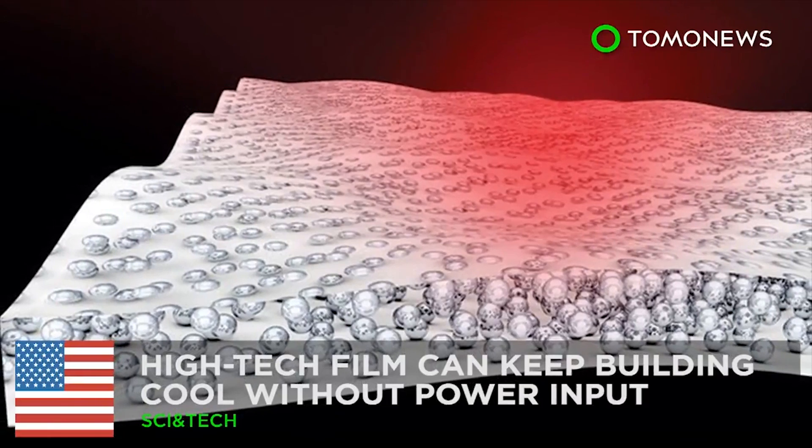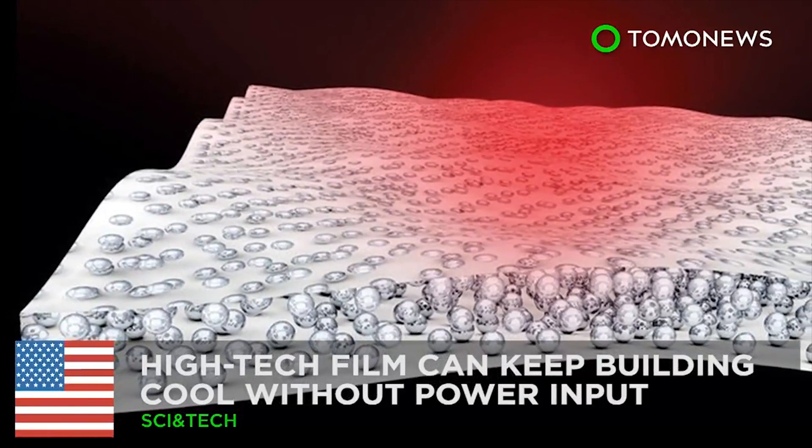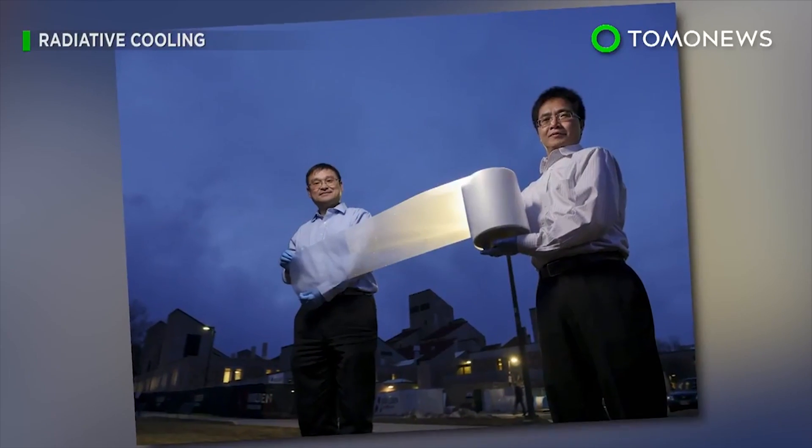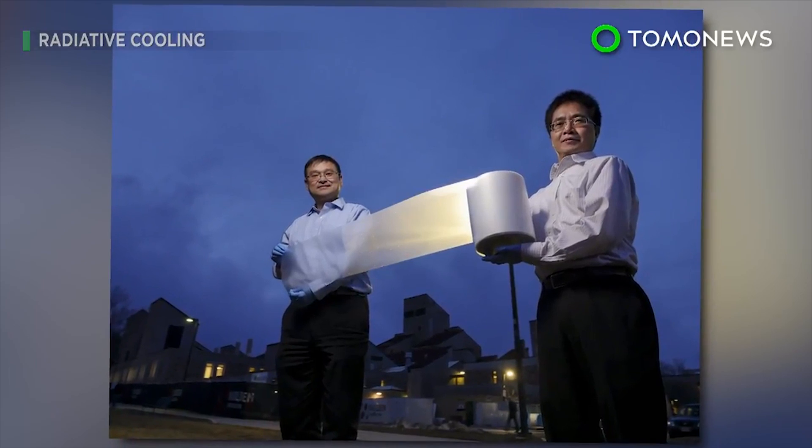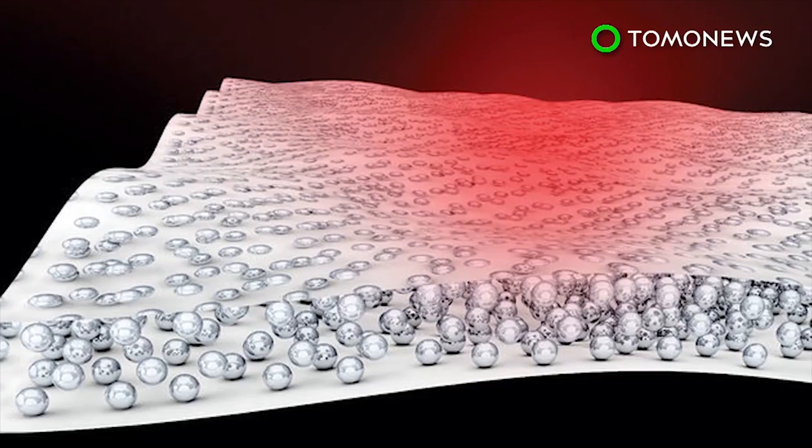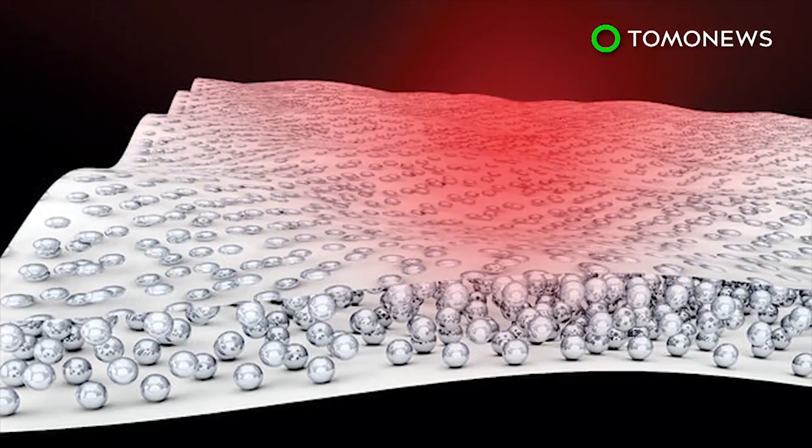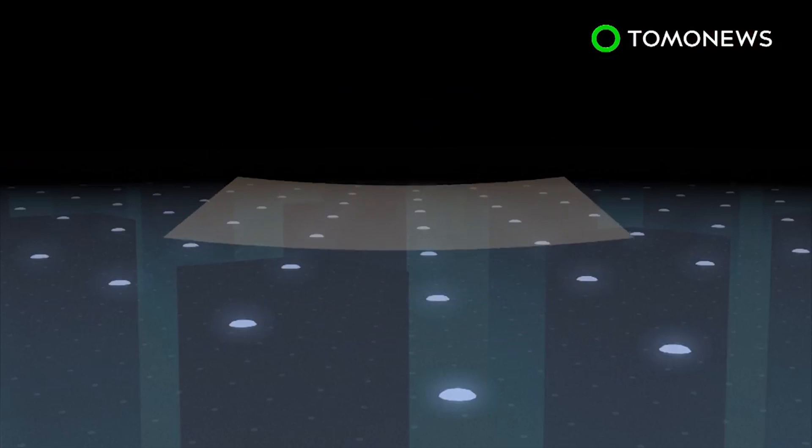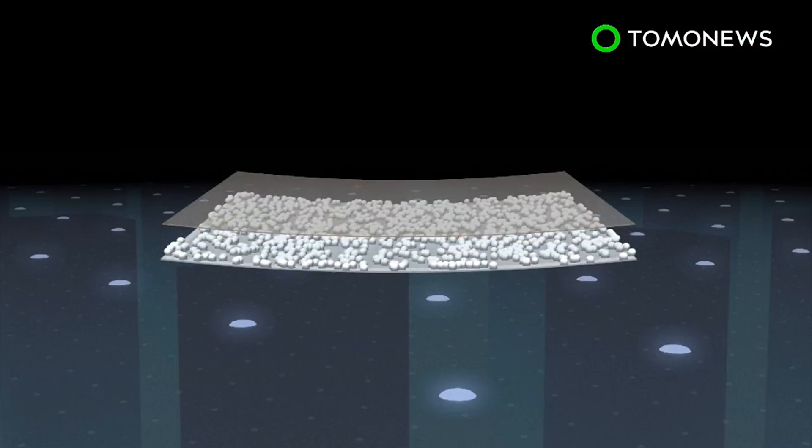A new way to stay cool without using power. Researchers at the University of Colorado in Boulder have invented a special film that can cool buildings without using any power. The cooling film measures about 50 micrometers thick and consists of a transparent polymer, tiny glass beads and a layer of silver coating.